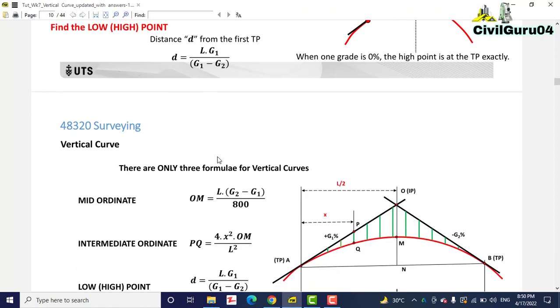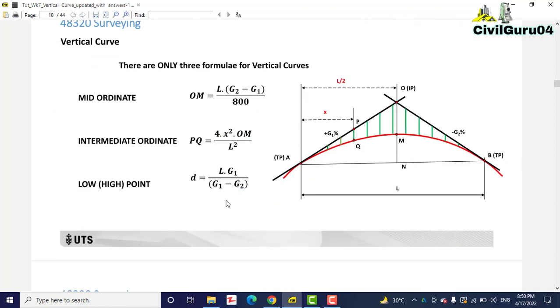We can calculate the highest and lowest point with this formula. We just need to focus on these three formulas to calculate our vertical curve: mid-ordinate, intermediate ordinate, and low point ordinate or you can say low point or high point also.